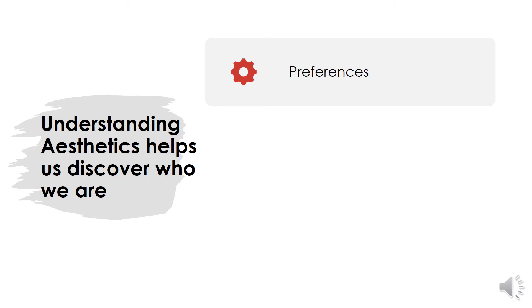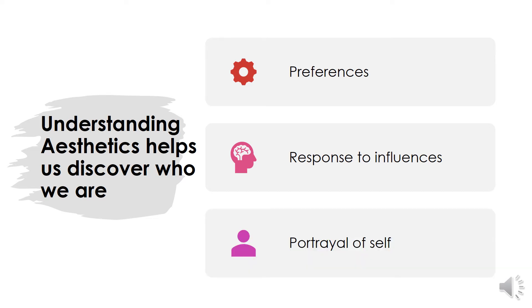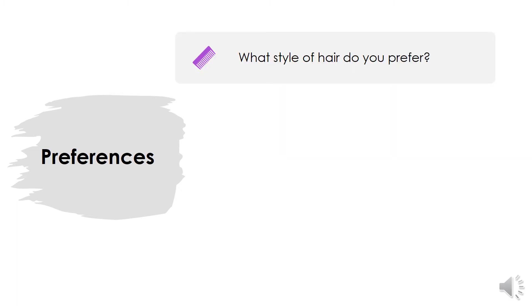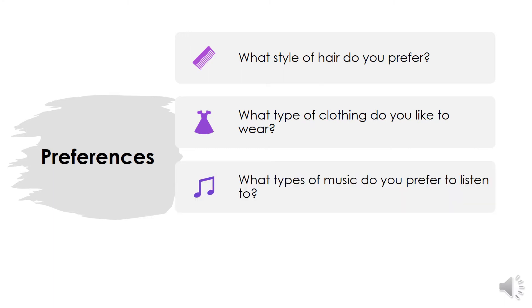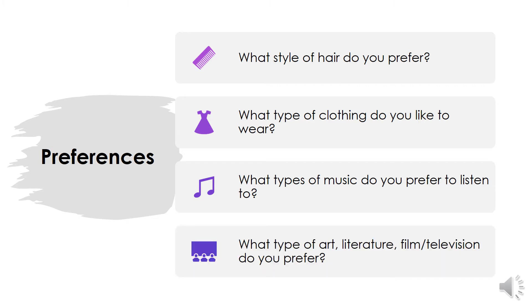Understanding aesthetics helps us discover who we are. We see this in our preferences, in our response to influences, and in our portrayal of our own selves. Our preferences can be what style of hair you prefer, what type of clothing you like to wear, the types of music you like to listen to, and what type of art, literature, film, and television you prefer.